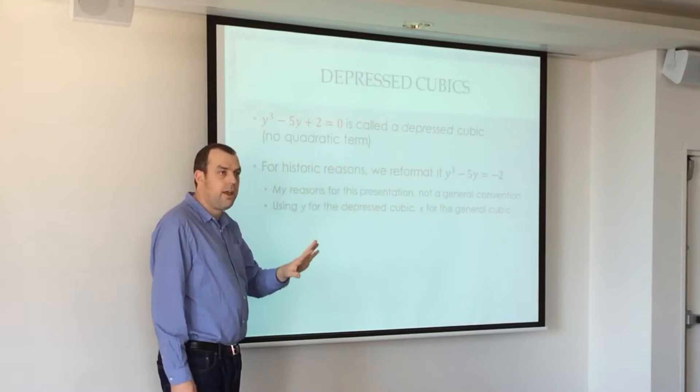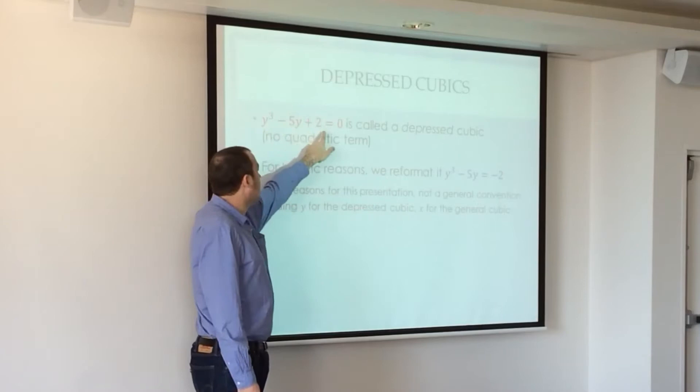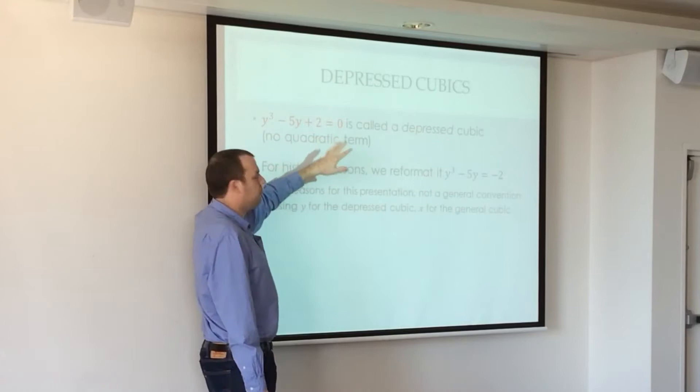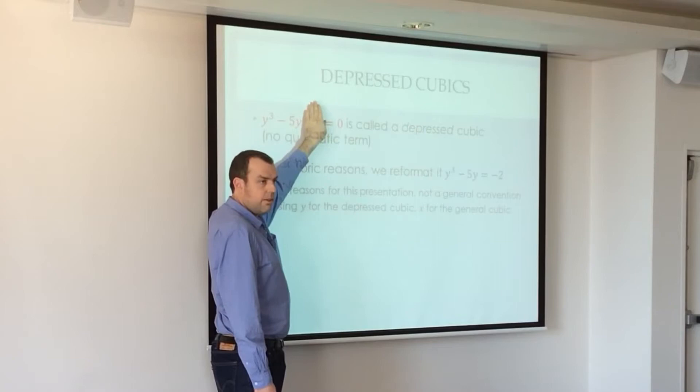I'm going to rewrite it in this form, put the constant on the right-hand side because that's what the 16th century Italians did, because they couldn't write something like that because they didn't acknowledge negative numbers. So if they had it like that, then that would mean that that would need to be a negative number and they didn't like negative numbers.